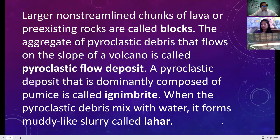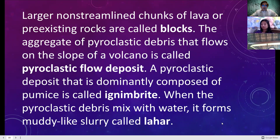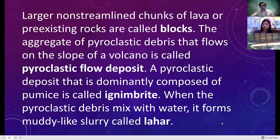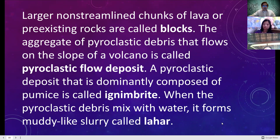Larger non-stream chunks of lava or pre-existing cold rocks are called blocks. The aggregate of pyroclastic debris that flows on the slope of a volcano is called a pyroclastic flow deposit. Those expelled from the crater are also pyroclastic flow deposits. A pyroclastic deposit that is dominantly composed of pumice is called ignimbrite.